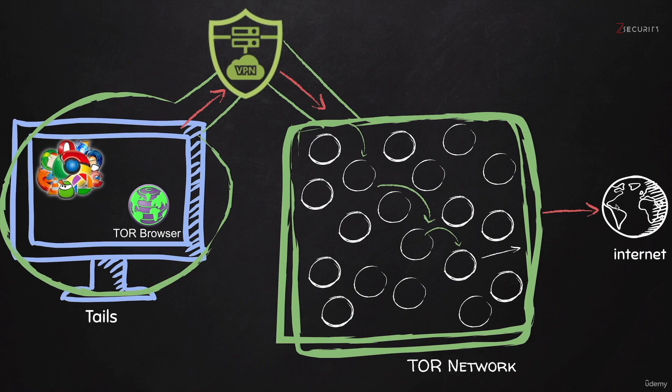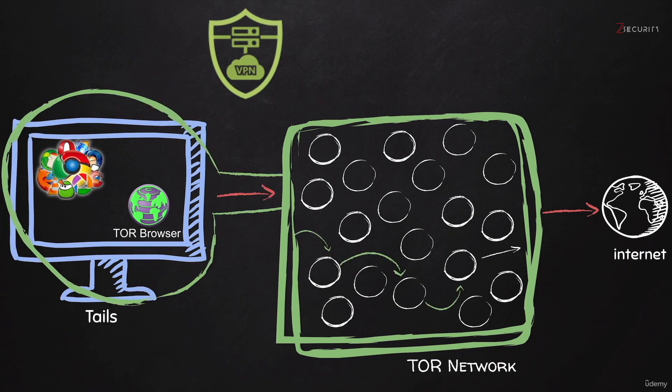Now, if your VPN provider has a Tails client, you will not need to manually do this — the client will do everything for you. The only problem is most VPN providers do not support Tails, so you'll have to do a bit of research to find ones that support it. We actually have our own VPN service, ZS VPN, and we support Tails. Let me show you how the client works, just as an example.